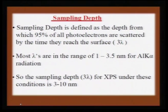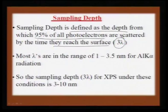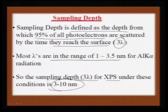XPS is a surface technique because of its sampling depth: defined as the depth from which 95% of all photoelectrons are scattered by the time they reach the surface. This is of the order of 3λ. For aluminum Kα radiation, most mean free paths λ are in the range 1 to 3.5 nm, so the sampling depth for XPS is approximately 3–10 nm. This confirms it is predominantly a surface rather than bulk probe.